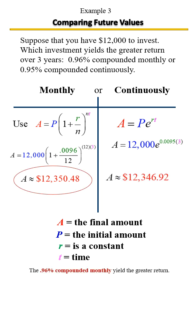So as you can see, the 0.96% compounded monthly yields a greater return.